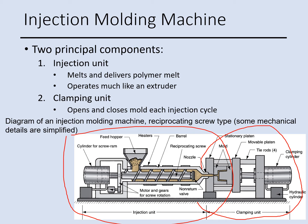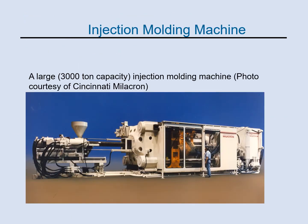In the clamping unit, we have a mold which opens and closes, and the part is made in this section. Looking at an actual machine, this is a very large machine — you can see a person standing next to it to get an idea of its size. The capacity shown here is 3,000 tons.